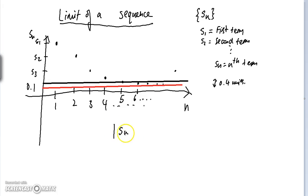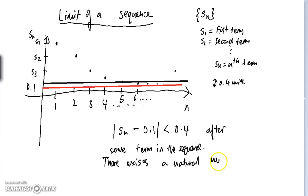all the terms of my sequence and 0.1, which is denoted with this absolute value sign, is always less than 0.4 after some term in the sequence. In other words, there exists a natural number, big N,